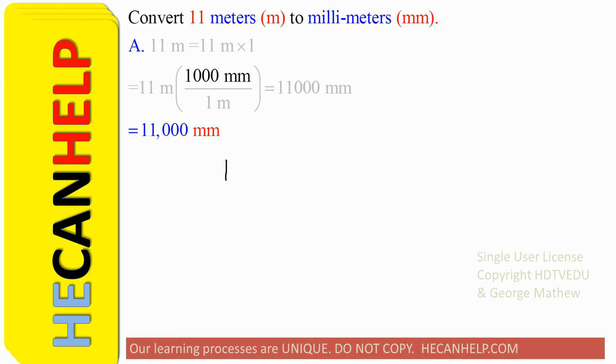So we have to convert 11 meters. We multiply that by 1, and then we replace 1 in such a way that we have meters at the bottom. If we know that 1 meter is equal to 1,000 millimeters, so that the meter and the meter, the units cancel, and what are we left with?